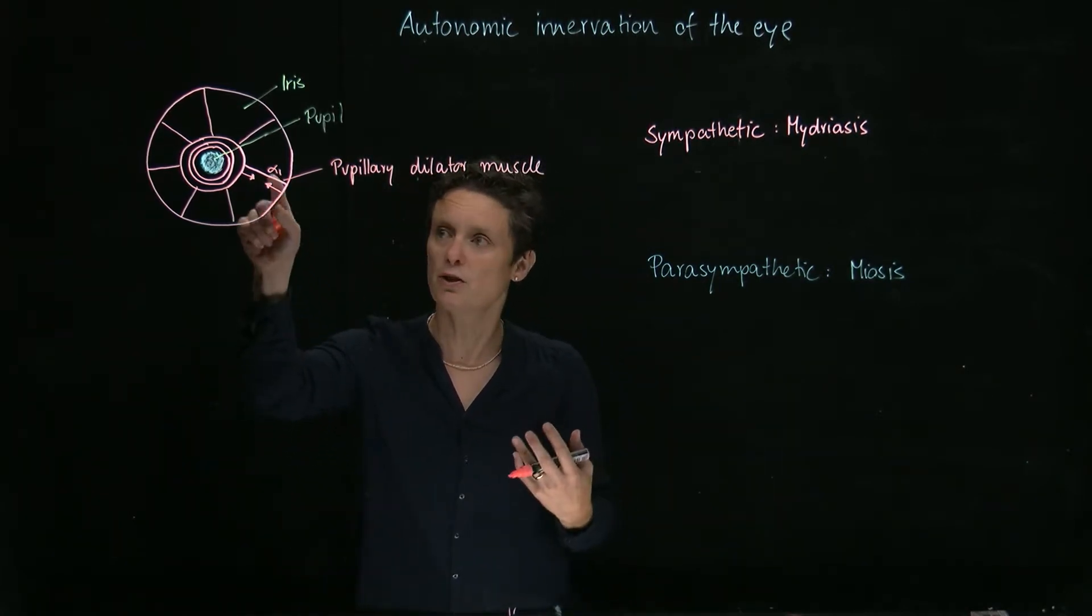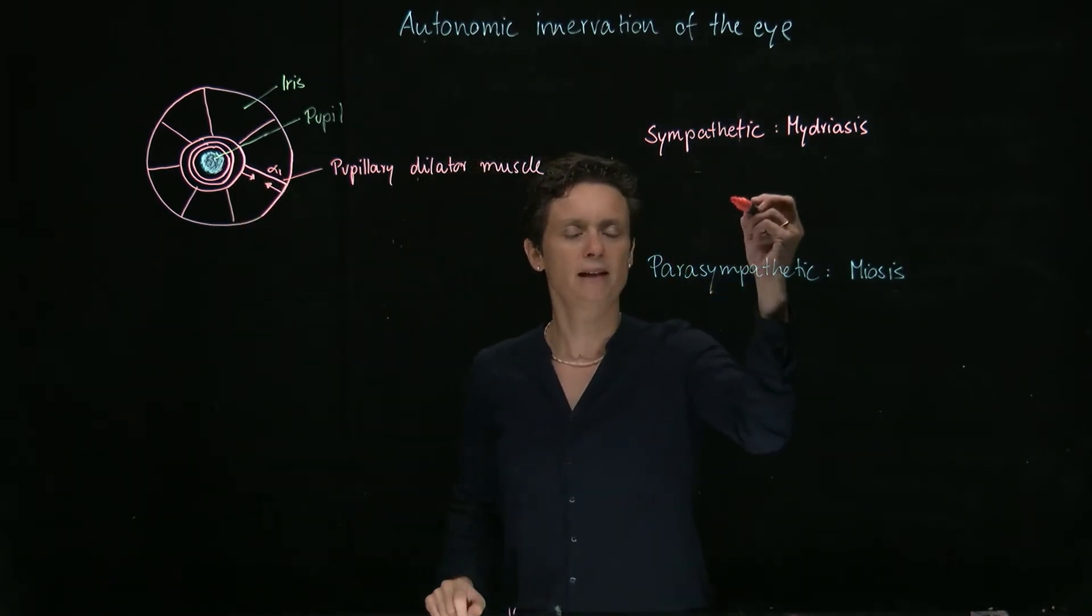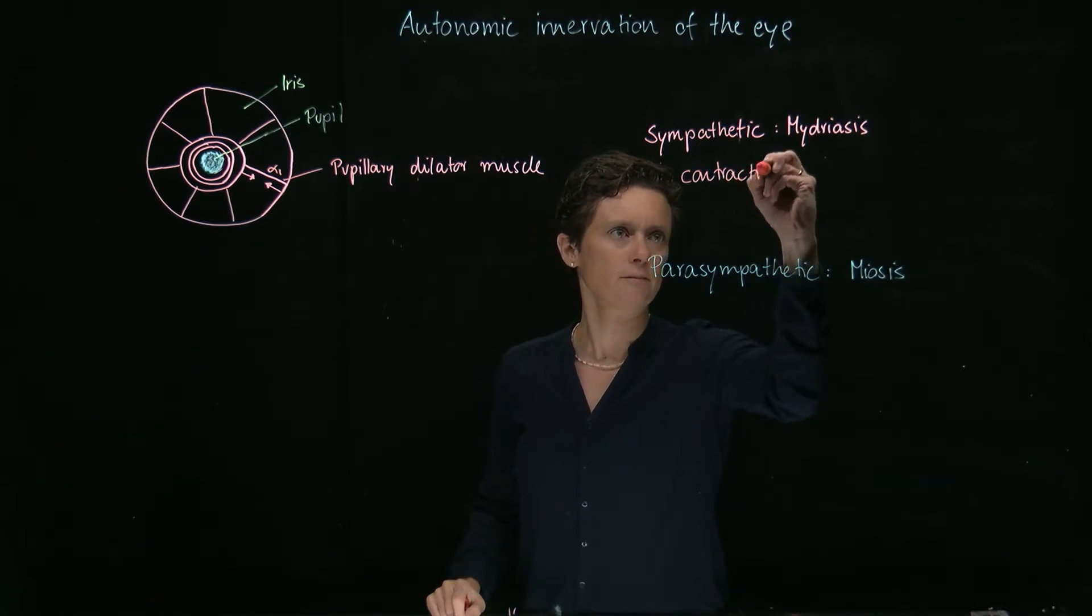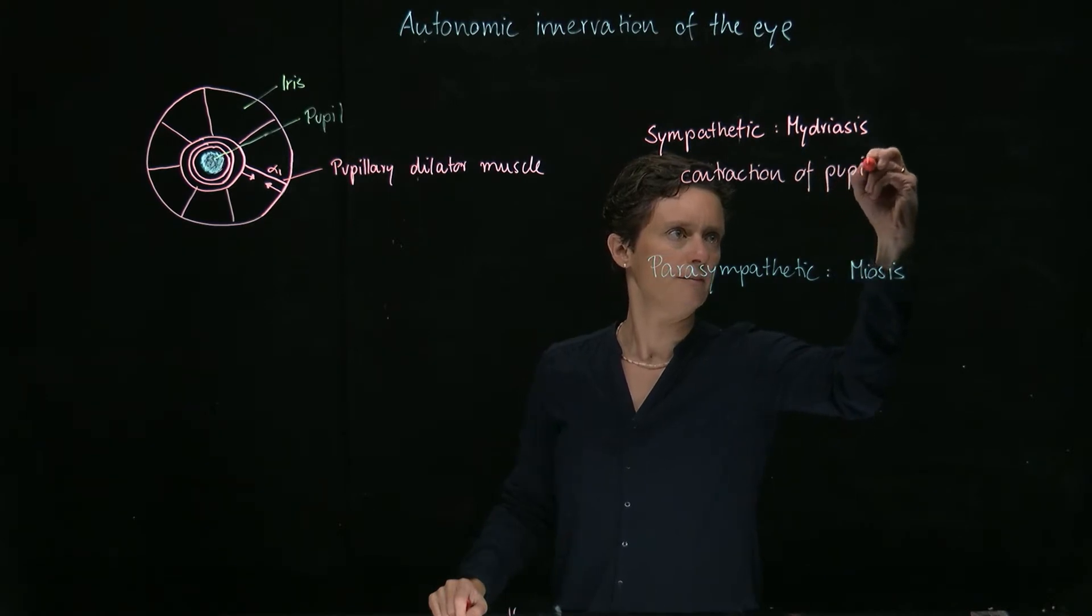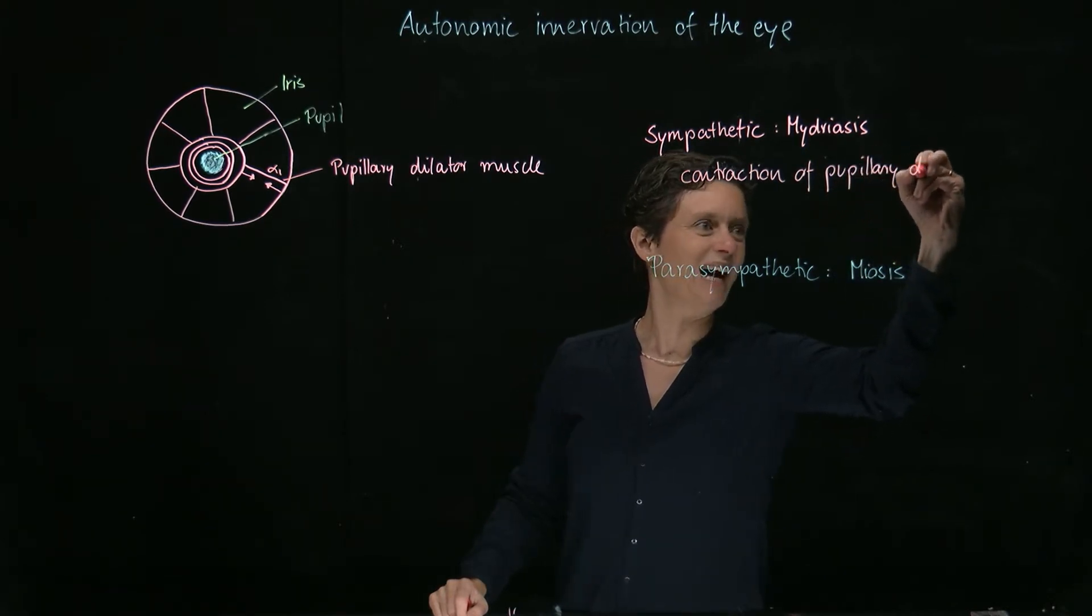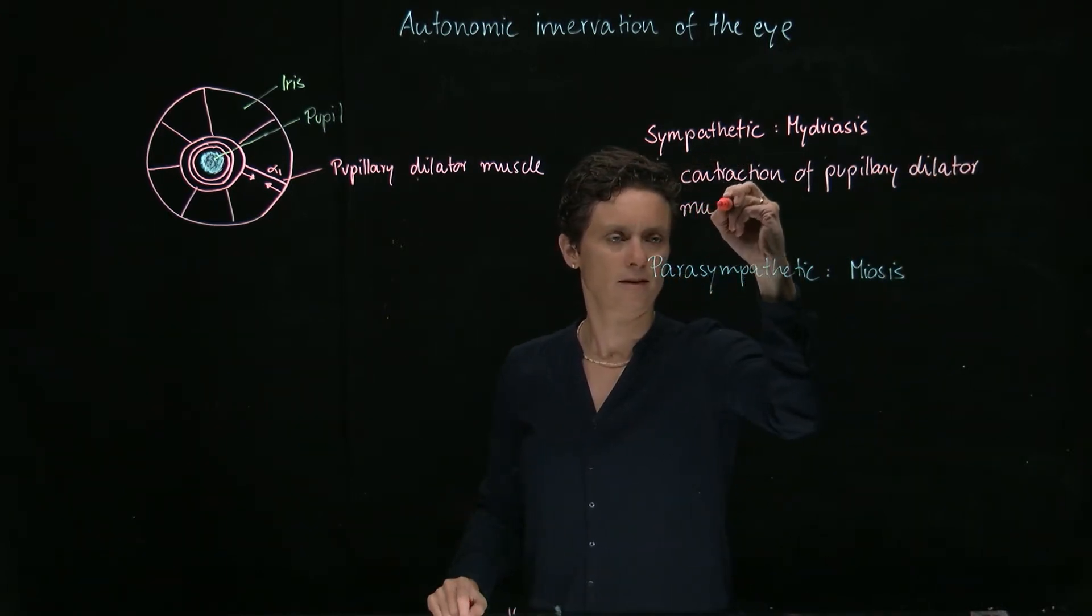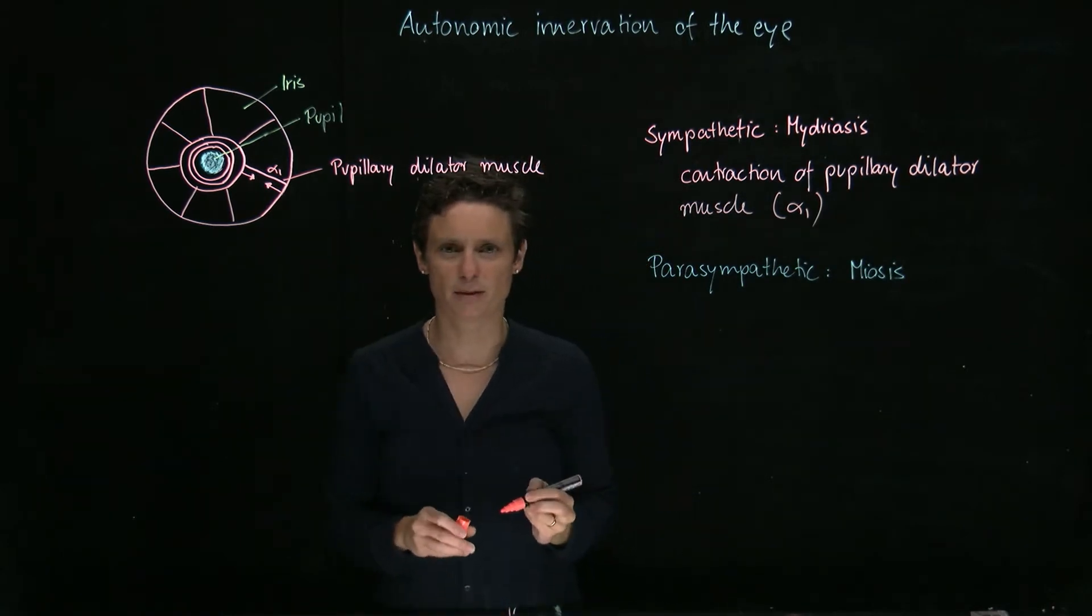But to do so, it needs contraction. So the sympathetic nervous system actually mediates contraction of the pupillary dilator muscle, and that's going to be mediated via alpha-1 receptors.